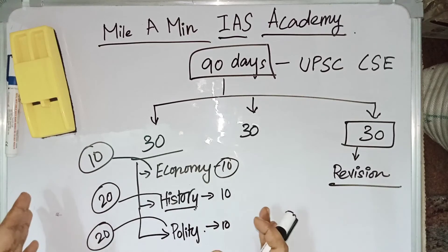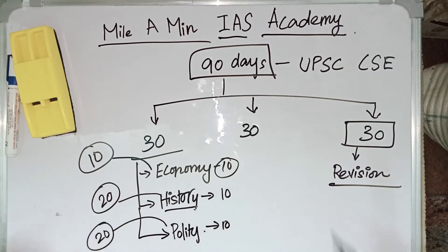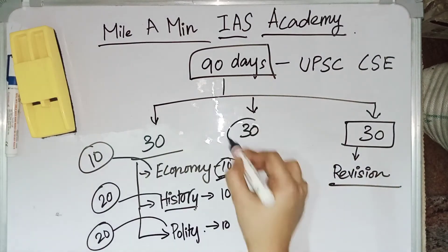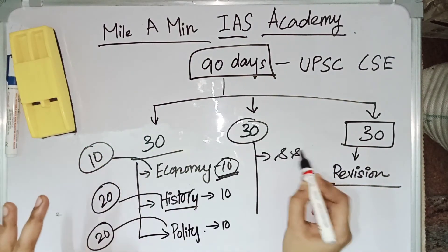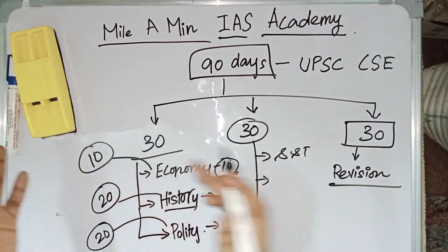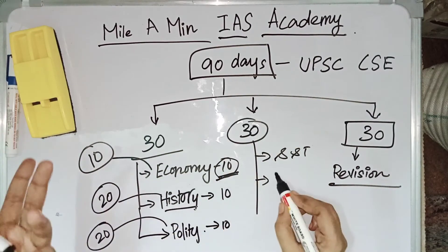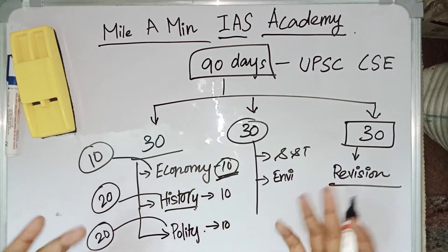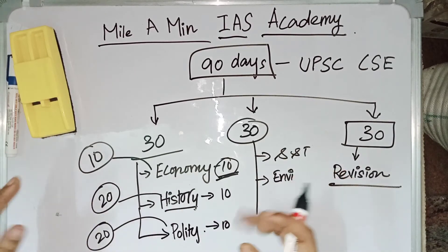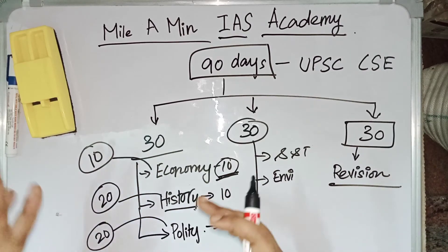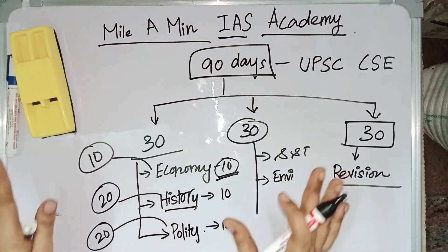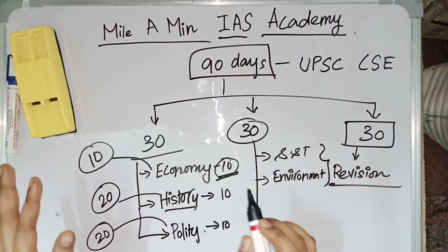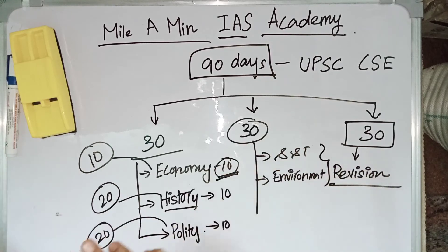If you are starting preparation right now, you can't complete the entire syllabus, so you should focus on things that are really important. In the next 30 days we can complete the remaining 3 subjects. The rest 3 subjects are science and technology, environment, and geography. Science and technology is gaining importance because of the pandemic. Environment is also important because of natural climatic changes, anthropogenic causes, climate change, global warming, and events like forest fires — just recently Canada has also been suffering from forest fires. For science and technology and environment, you should focus more on current affairs compared to static content.